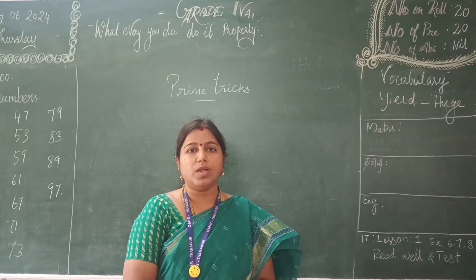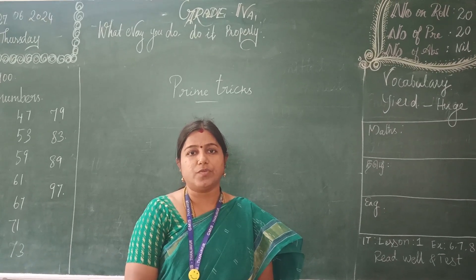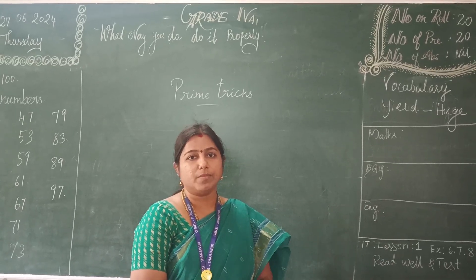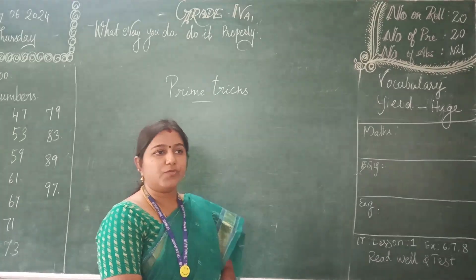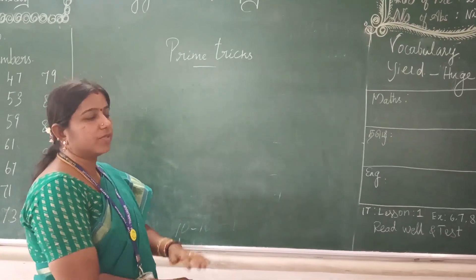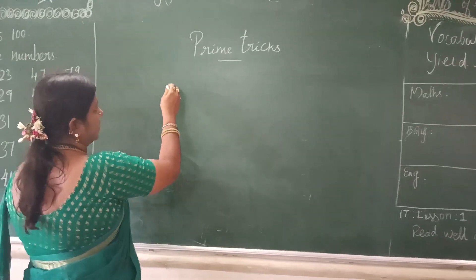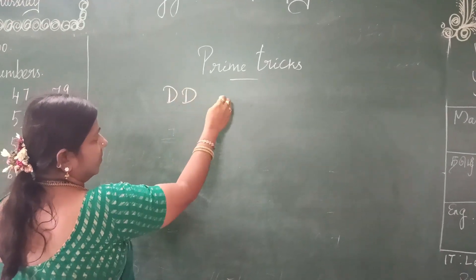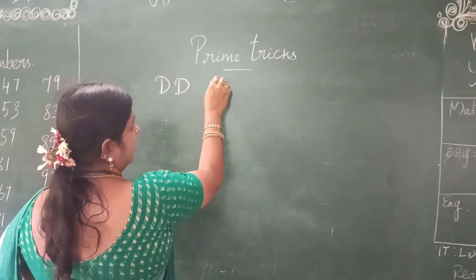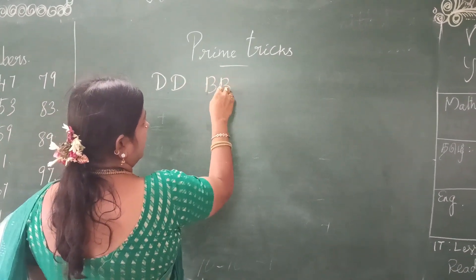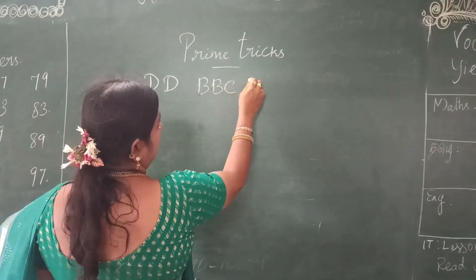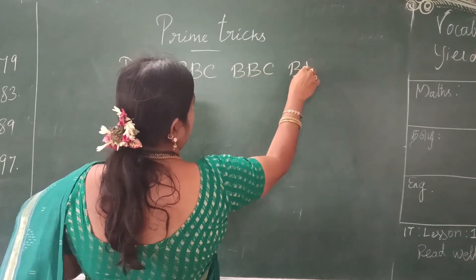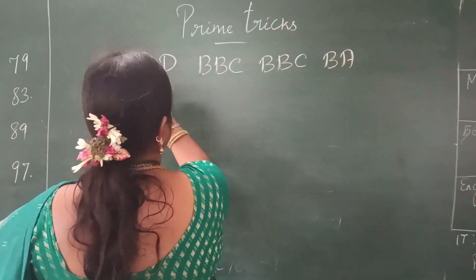Between 1 to 100, we are going to find out the prime numbers by using this Prime Fits formula. First, we have to understand the concept — each letter represents a digit: B, D, C, D, D, C, D, U — these are the coded values we will use.